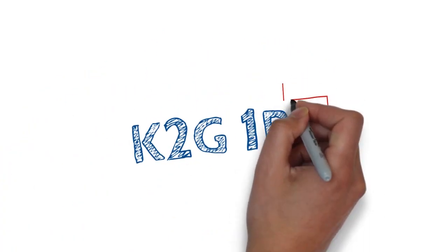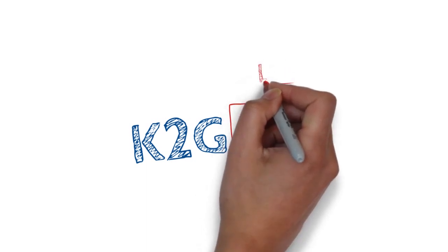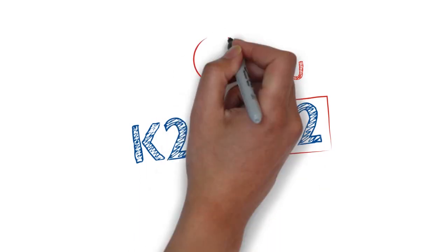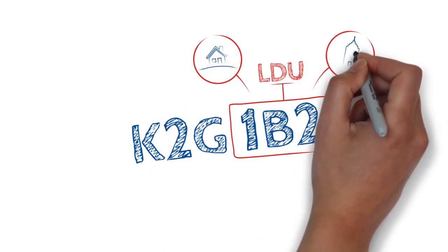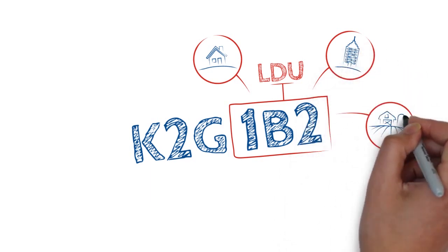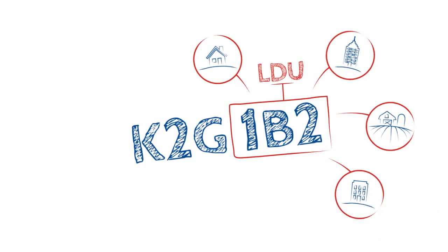The last three characters of the postal code are called the LDU. The LDU is the smallest basic unit that represents a specific point or set of points of call located within the FSA. It helps with the final sortation and identifies a series of houses, businesses, farms, or apartments. It can also identify a single point of call that receives a large volume of mail, such as an office building.